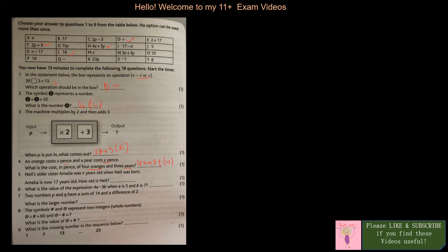Neil's older sister Amelia was nine years old when Neil was born. Amelia is now 17 years old. How old is Neil?